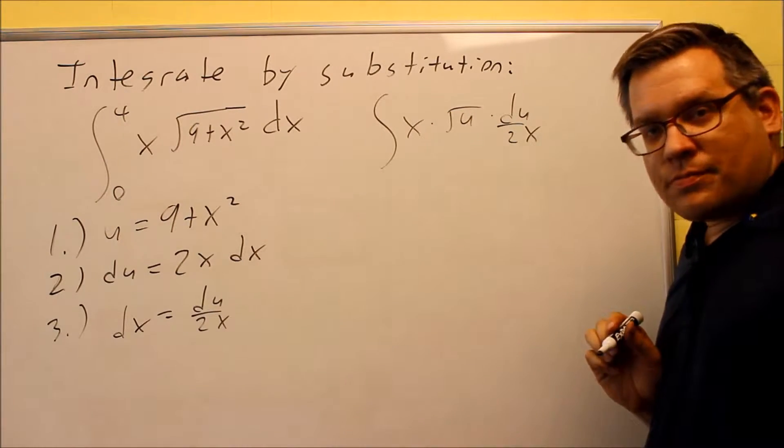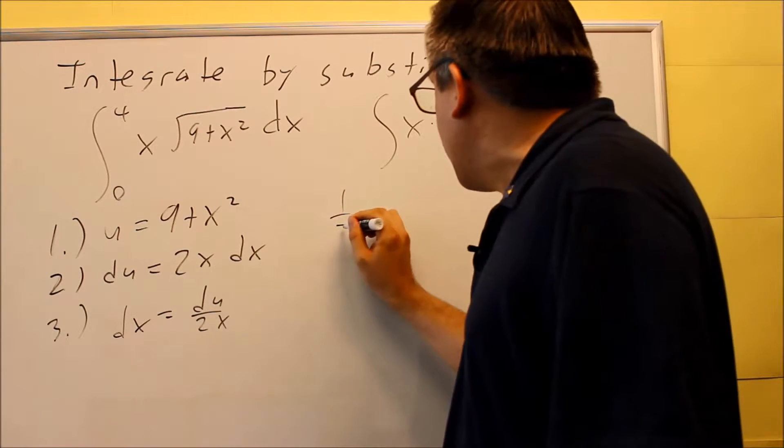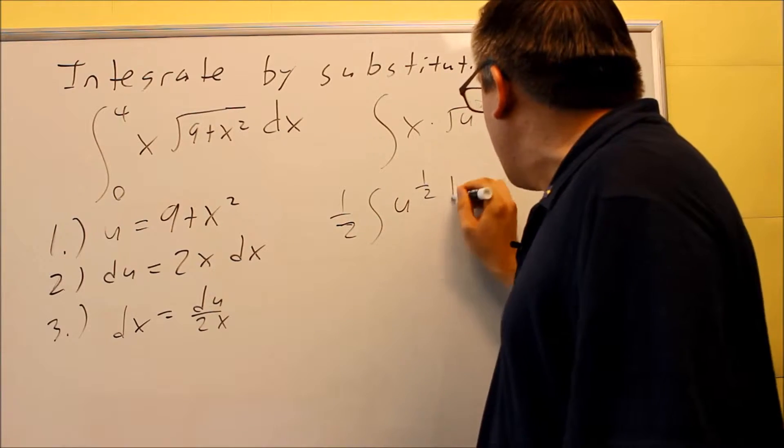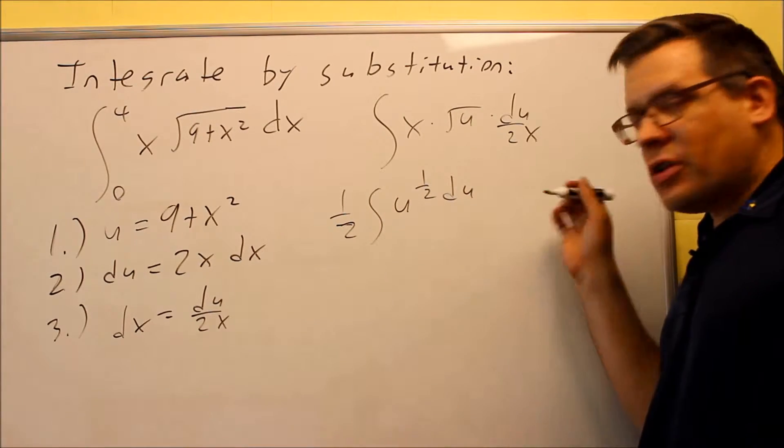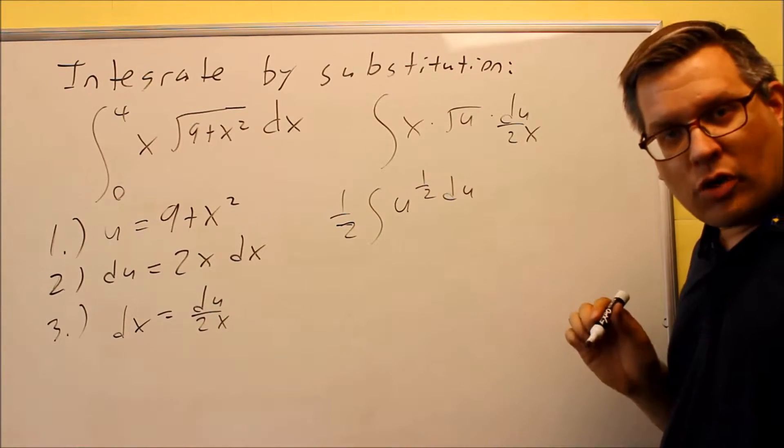So the x's are going to cancel. There's a one half that we'll have that's going to come on the outside of our integral, so I'll have one half and I'll have u to the one half du. So that would be the end of step number three, because now you've taken it down into an integral where u is the only variable.